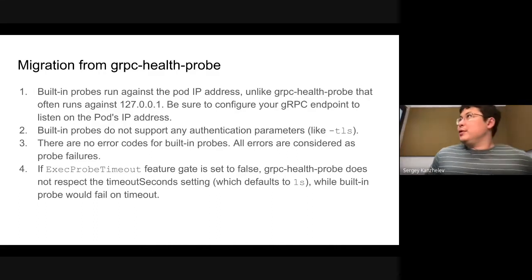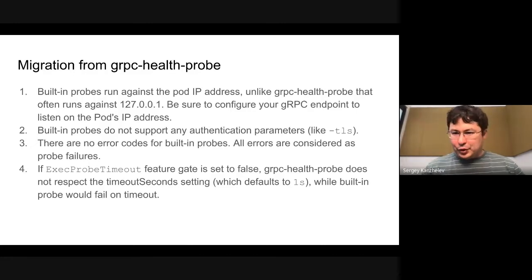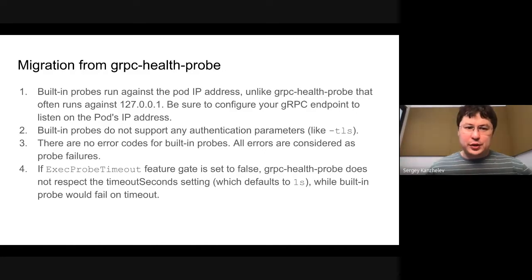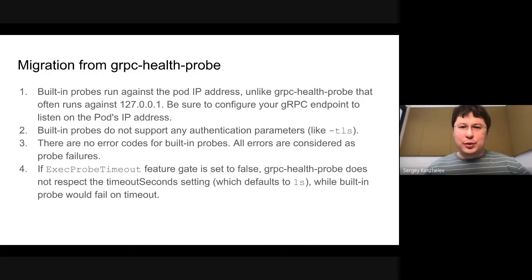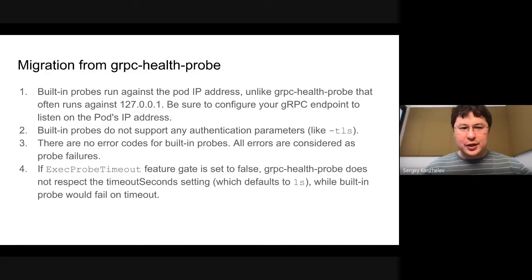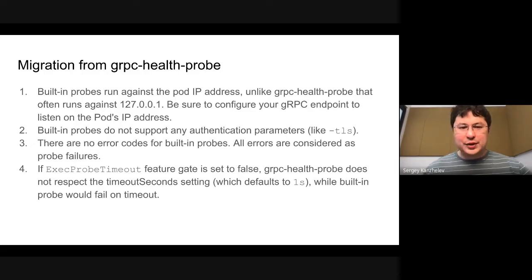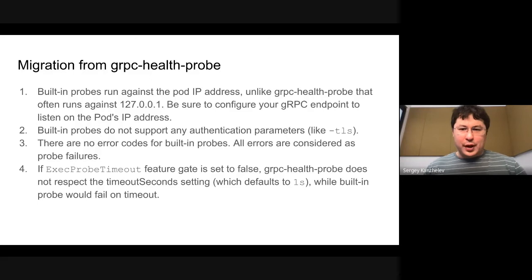I wanted to discuss migration from the gRPC health probe executable. This executable pings the gRPC endpoint you specify as an argument. One key difference: since the executable runs inside your container, you can ping with localhost. If your application only listens on localhost, it will just work — you can have a health-check port that you don't even expose publicly. That's a limitation of built-in probes versus exec probes, but I don't think it's a big limitation.